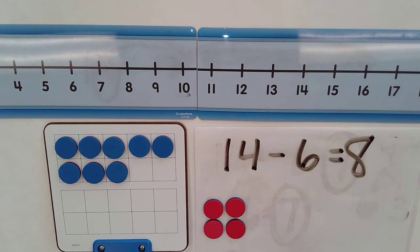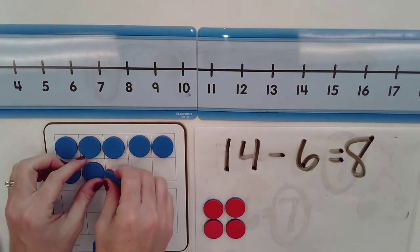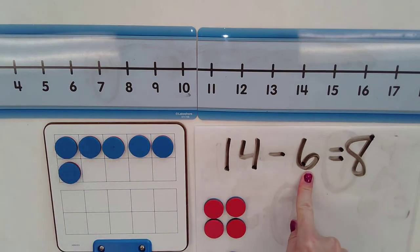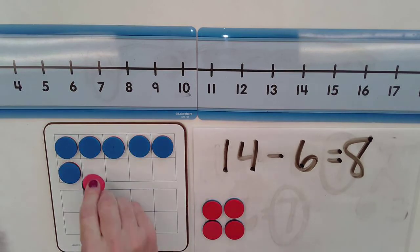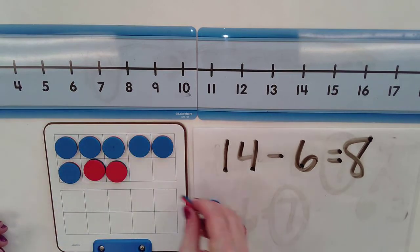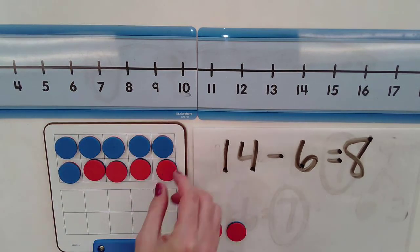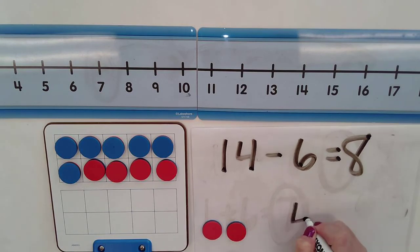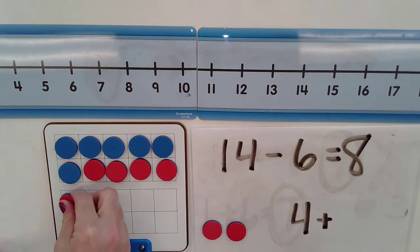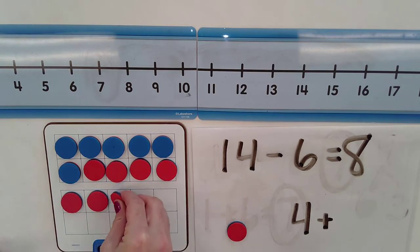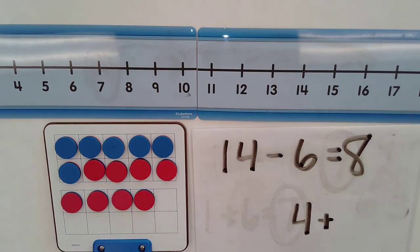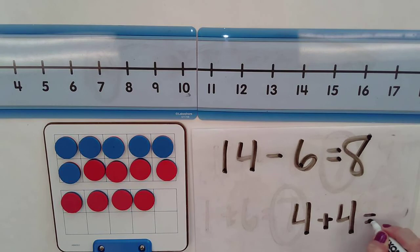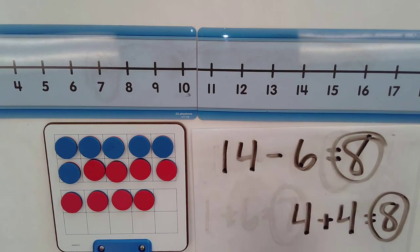I can also do the reverse. I could start with 6 and count up to 14. 1, 2, 3, 4. 4 gives me 10. And then I know I need to get to 14. So 1, 2, 3, 4. And 4 plus 4 is 8. And so I know that the difference between these two numbers is 8.